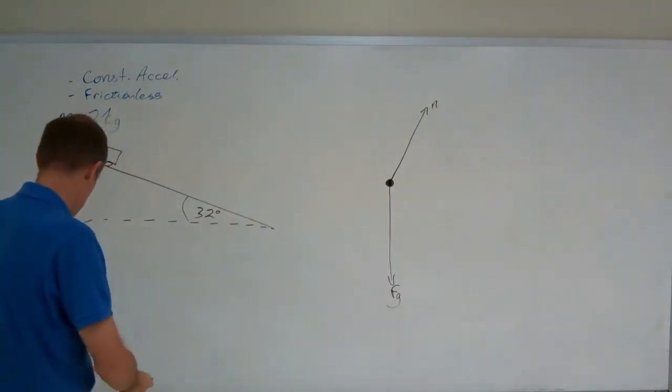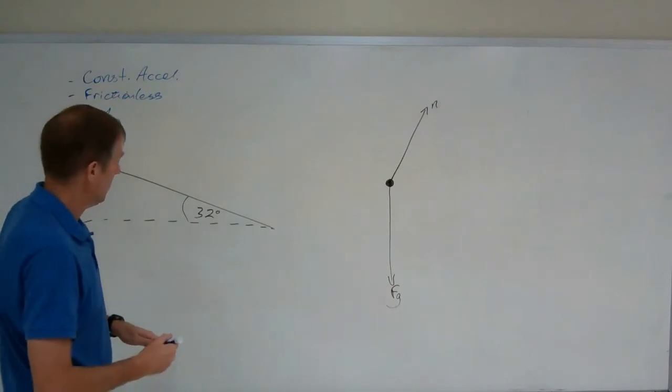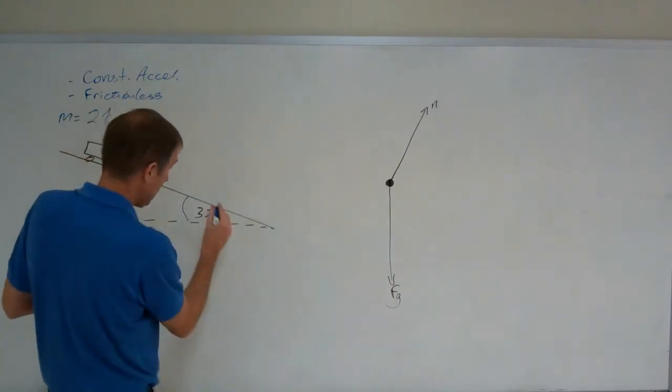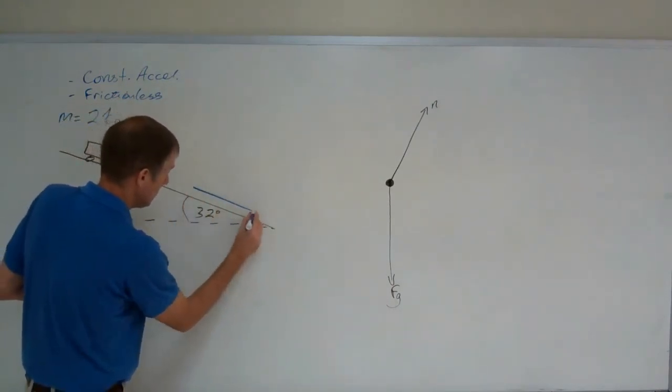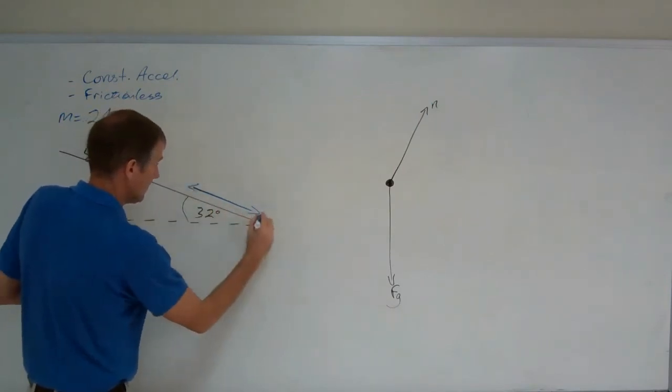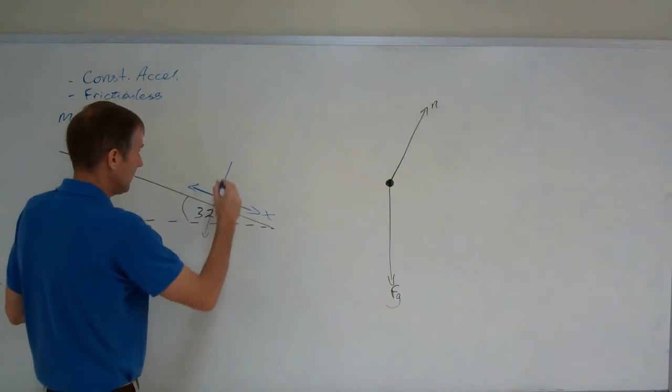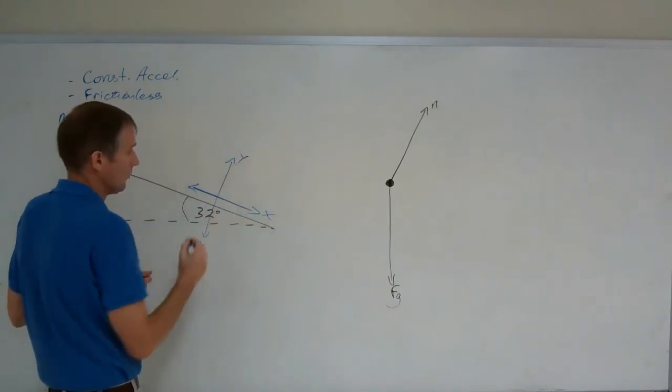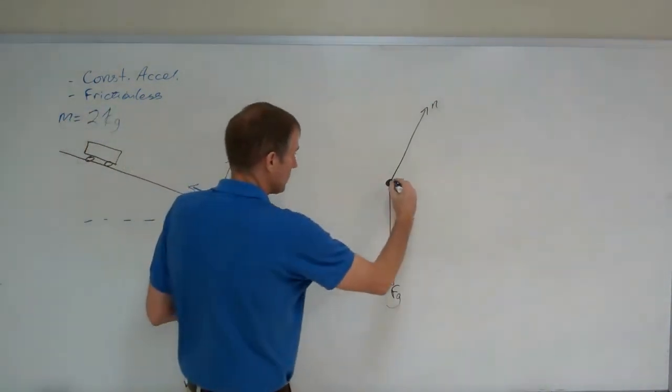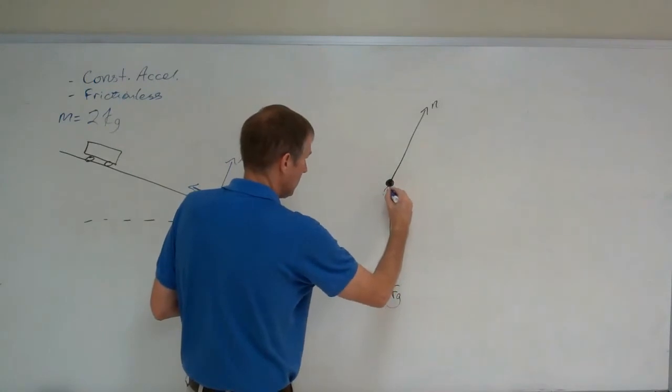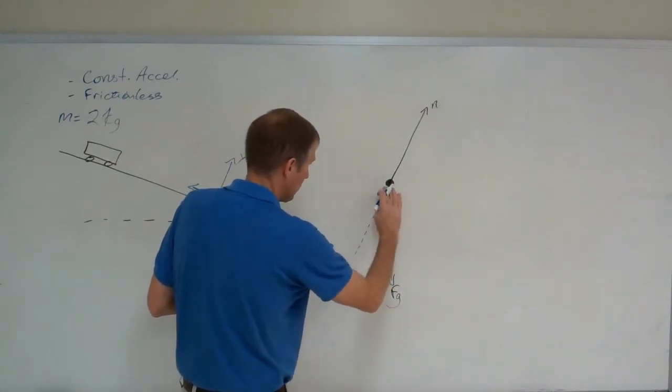Those are all the forces. We need to tilt the axes, so X is parallel to the ramp and Y is perpendicular to the ramp. Draw back straight back from the normal force.